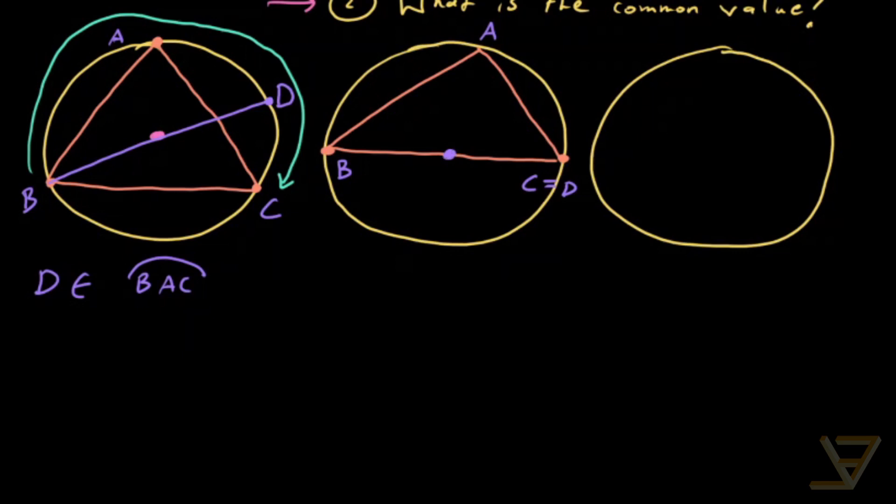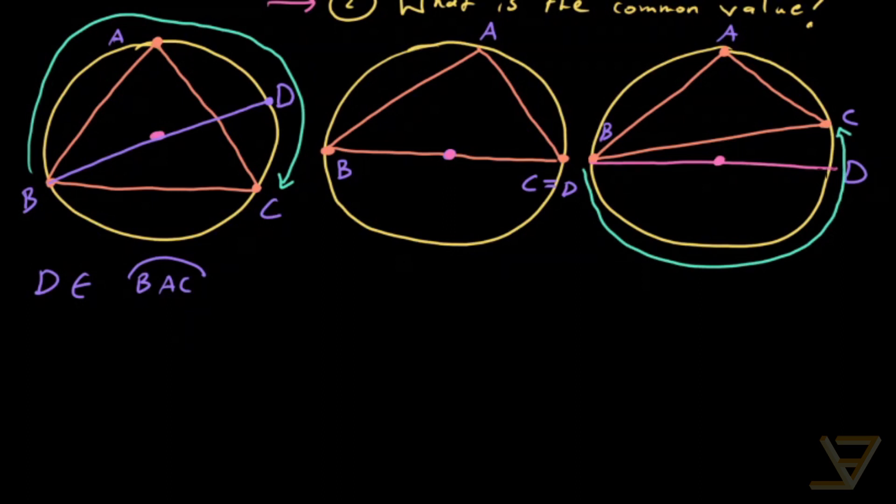And the final case that we're going to deal with is when the center of the circle is outside of the triangle. So when we draw the diameter through B, we have A up here, B down here, C over here, and D is here. So in that case, D is on the arc BC which does not contain A.